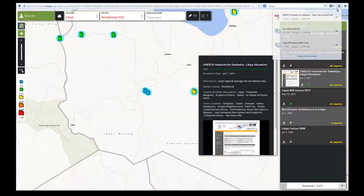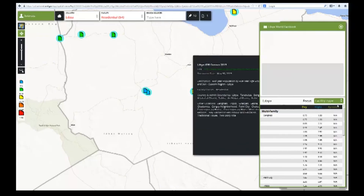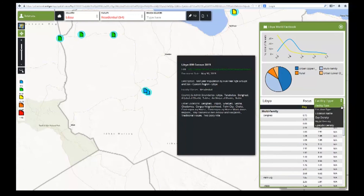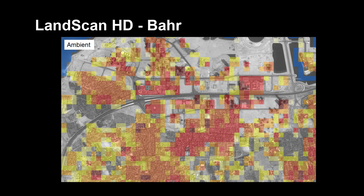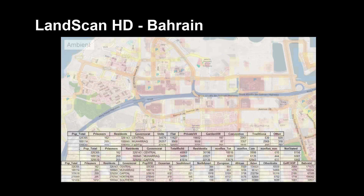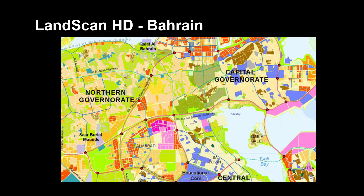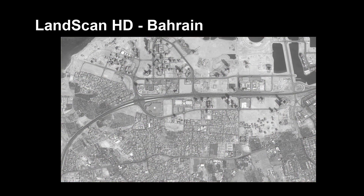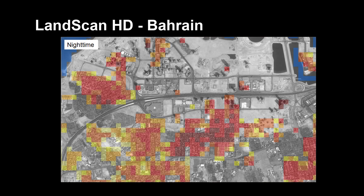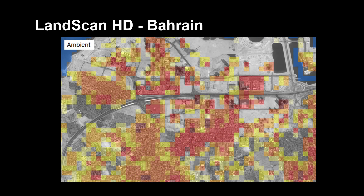Open source materials, such as journal articles, newspaper reports, and real estate information, are drawn in as well. This population distribution of Bahrain is the product of numerous sources, including land use and land cover information, volunteer geographic information, and high-resolution imagery. Combined, they produce nighttime and daytime, as well as an average or ambient population distribution.